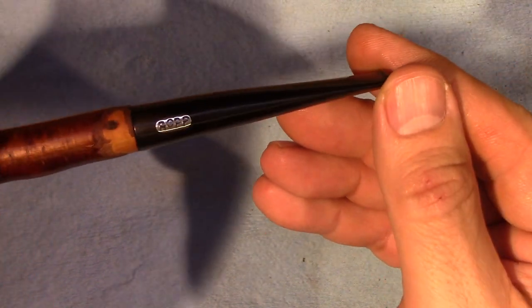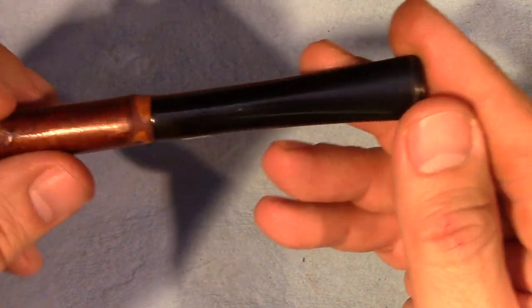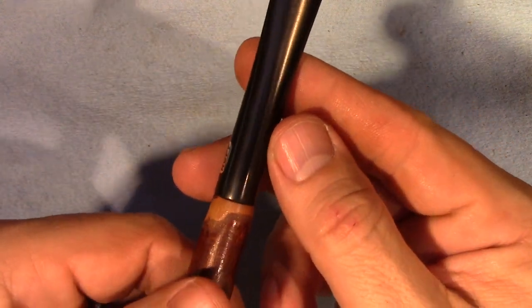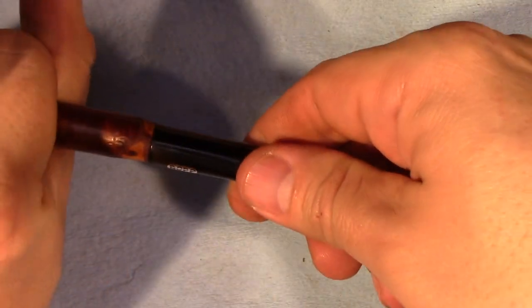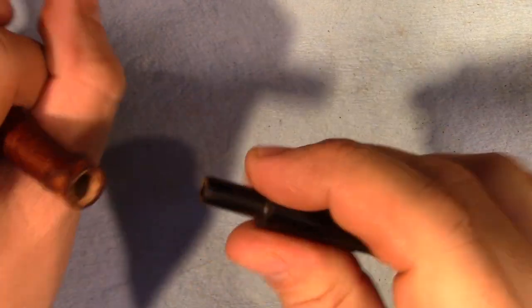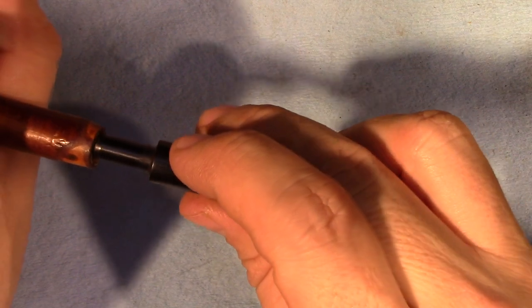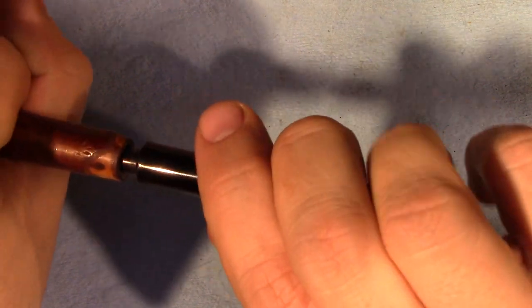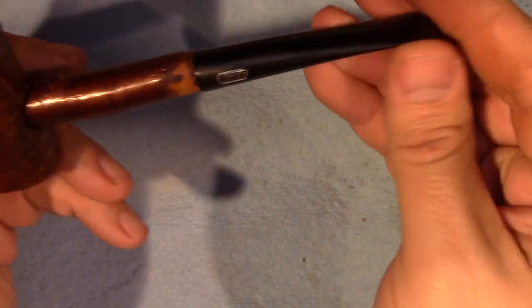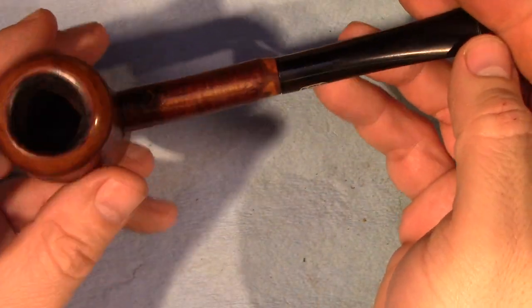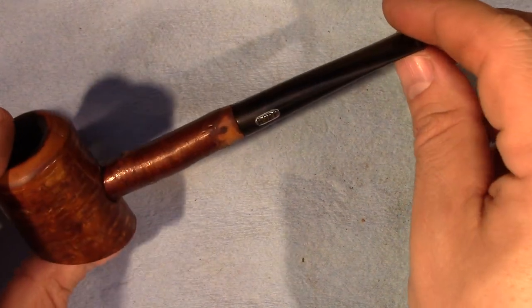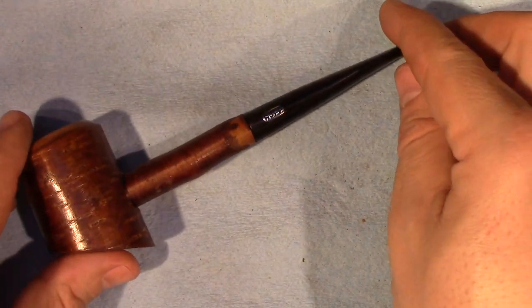The stem turned out nicely. That Ropp logo is just beautiful. All the tooth chatters out and all the oxidation is gone. And the cork liner is working out just fine. Doing a great job holding the stem. And we'll probably continue to do that for some time to come. Of course, if it starts to break down, I know how to replace it, so I'm not too worried about that. So, very happy with the stem.